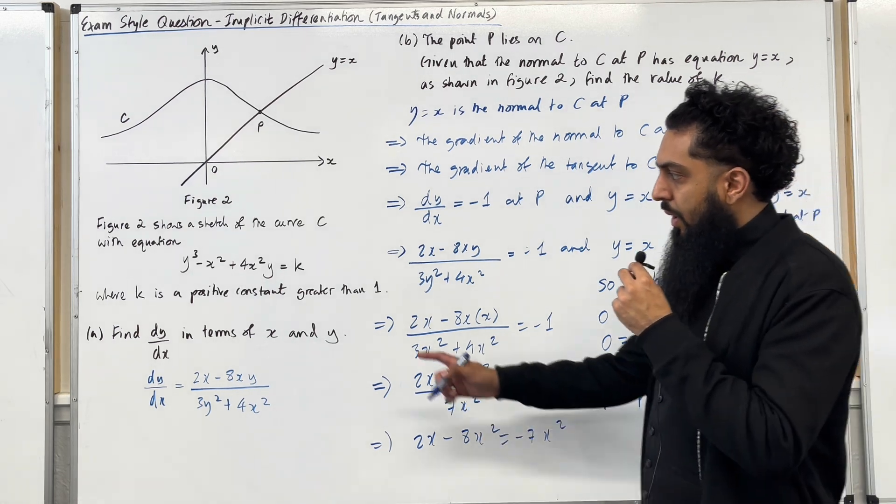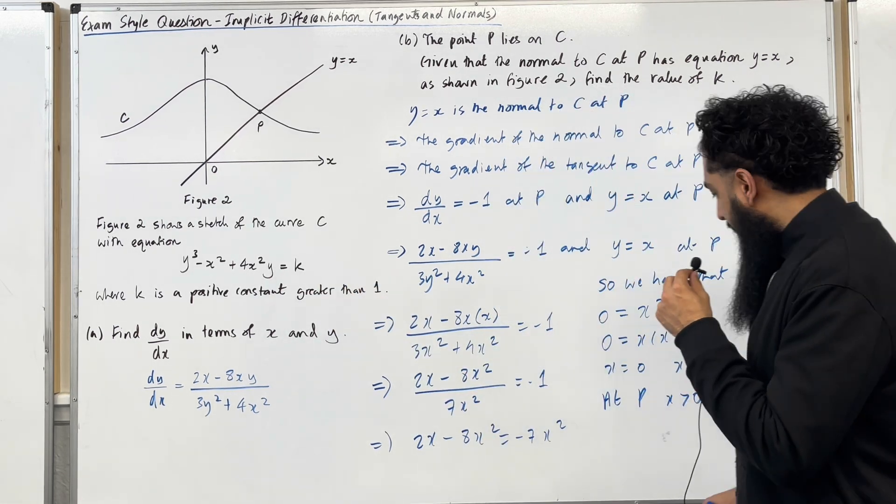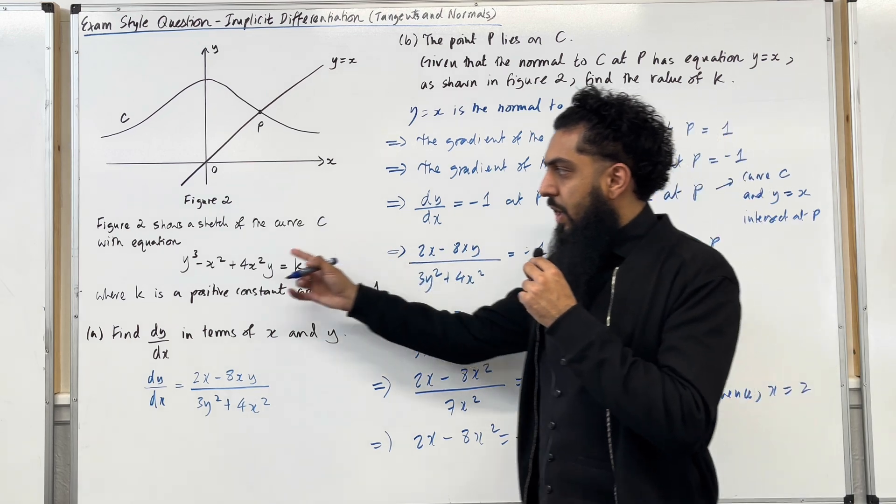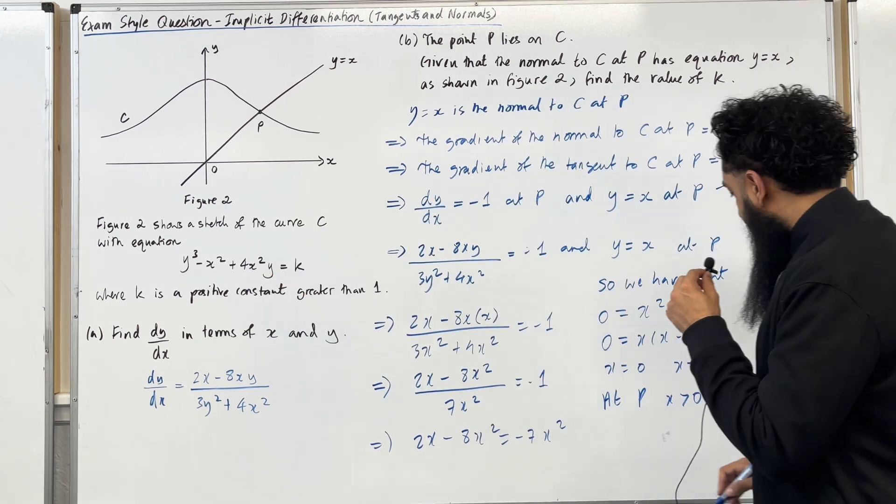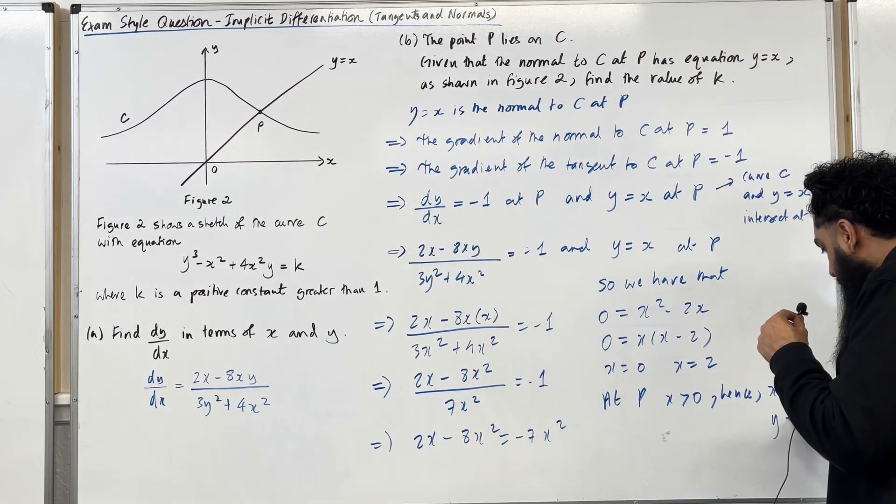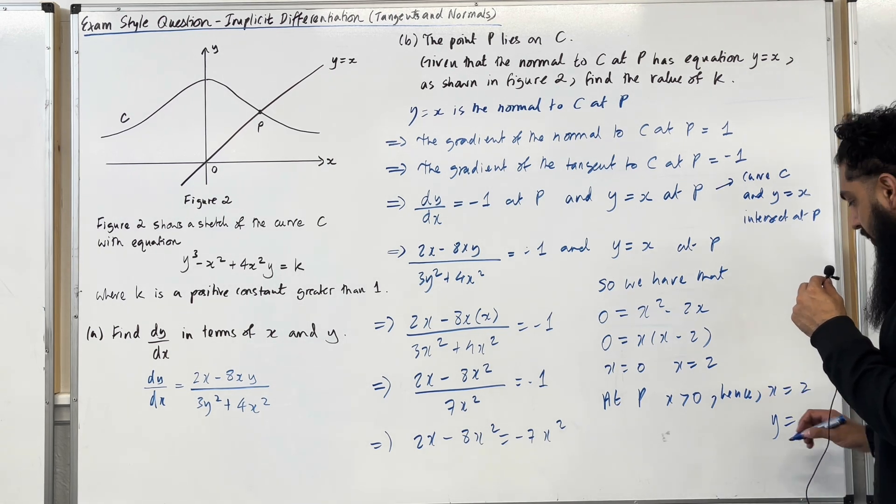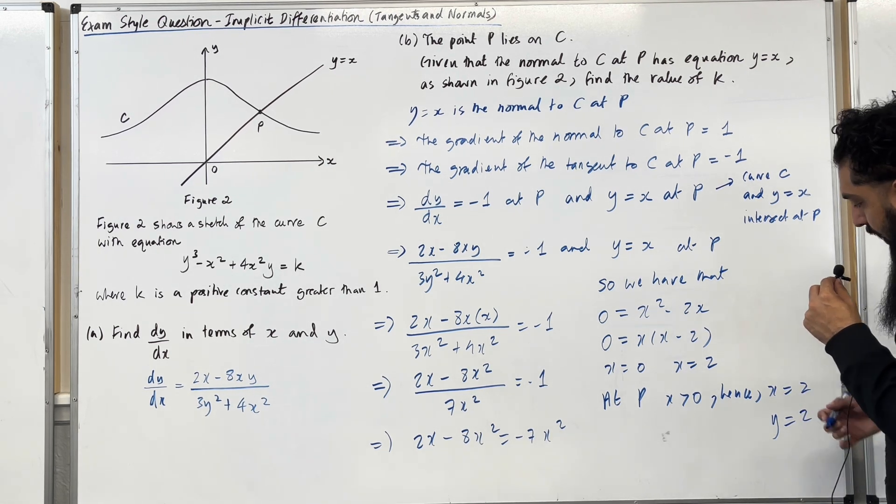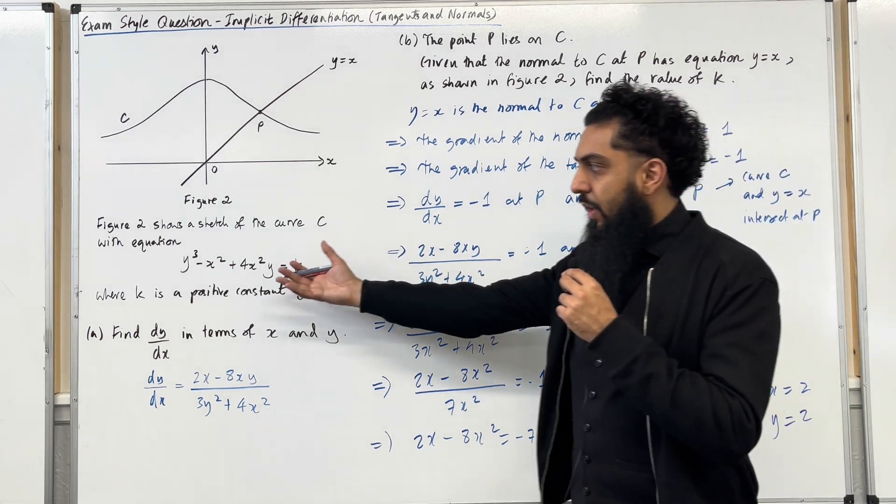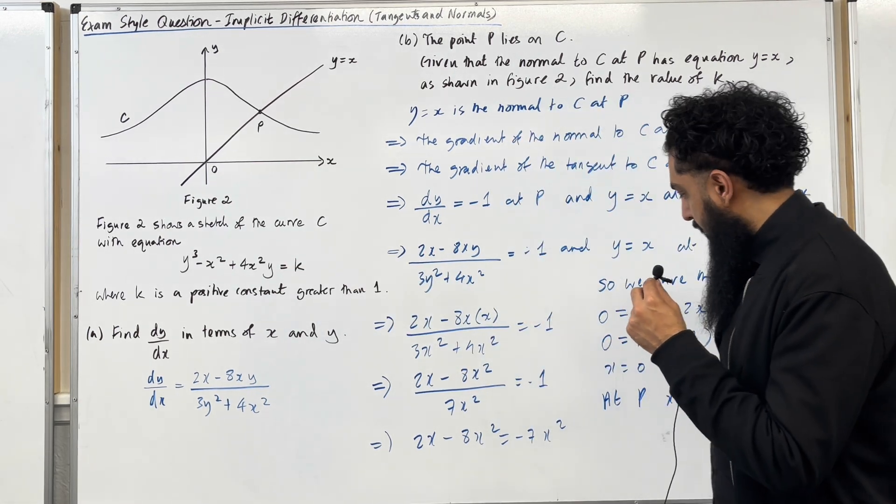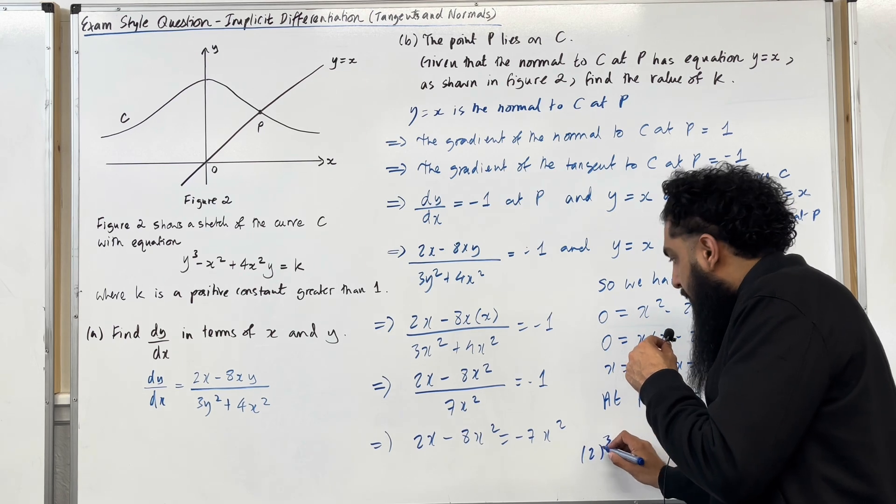Now to work out the value of k, we're going to substitute x equal 2 back into this equation. Before I do that, I know that y is equal x at P. So when x is 2, y is also 2. So I can substitute y equal 2 back into this equation with x equal 2. So I've got 2 cubed minus 2 squared plus 4 lots of 2 squared multiplied by 2 is equal k.